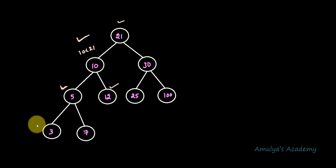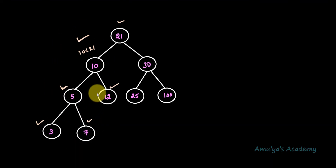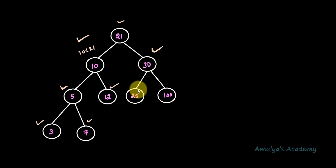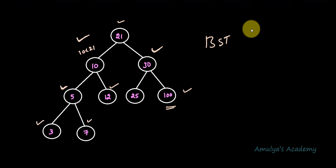Node 5 has child 3 on the left — smaller than 5, so correct. Node 7 is greater than 5 but less than 10 and 21, so it is correctly placed. That completes the left subtree. Now the right subtree: 30 is greater than 21 — correct. Node 30 has children 25 and 100. 25 is less than 30 but greater than 21, so it is on the left of 30. 100 is greater than 30, so it is on the right. This tree is a BST — it follows all binary search tree properties.